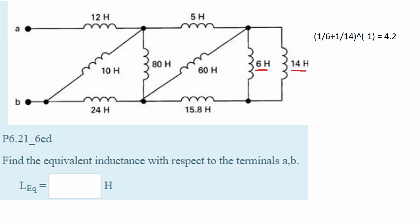This inductor is now 4.2 Henry. We can see that this inductor is in series with this 15.8 Henry inductor. If we add them together we are going to get 20 Henry.